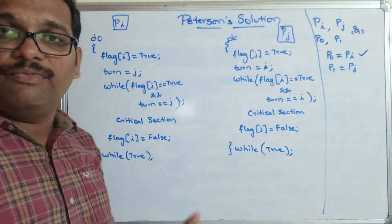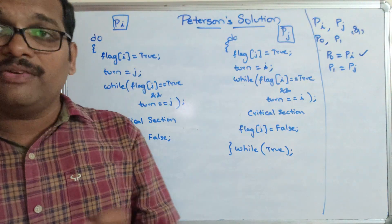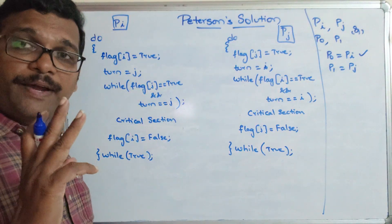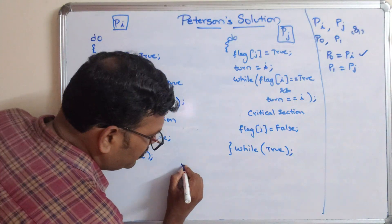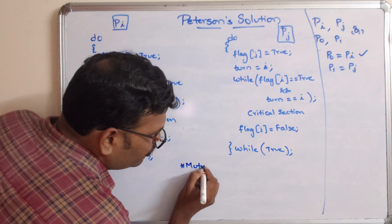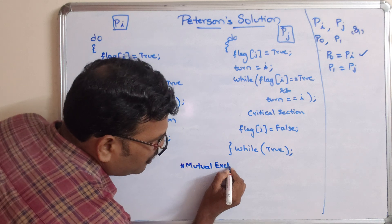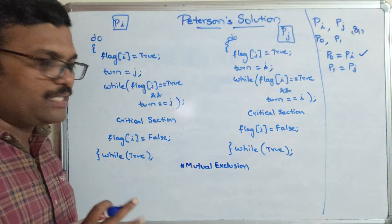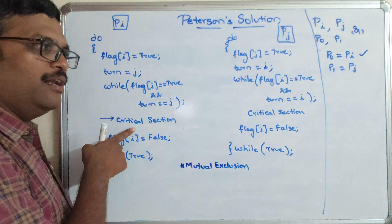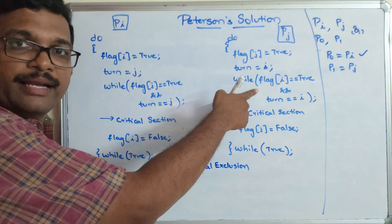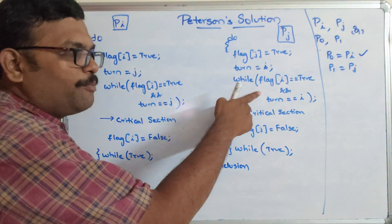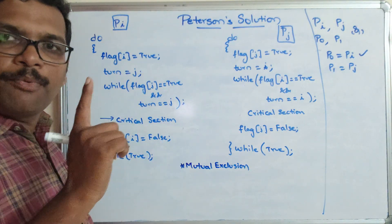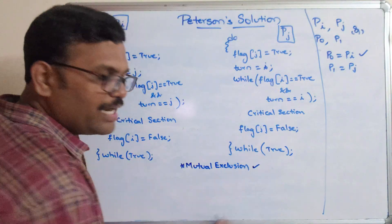This is how the Peterson solution executes. This solution is suitable only when there are two processes. Three conditions must be satisfied for a critical section problem. The first is mutual exclusion — at a time only one process should be in the critical section. If process I is in the critical section, process J waits in the entry section, and vice versa. So at any time, only one process is in the critical section. This condition is satisfied.